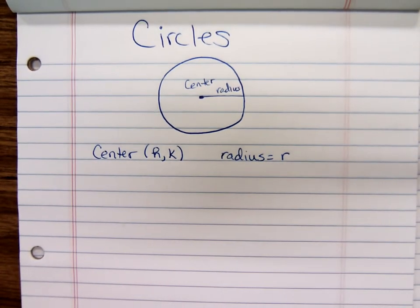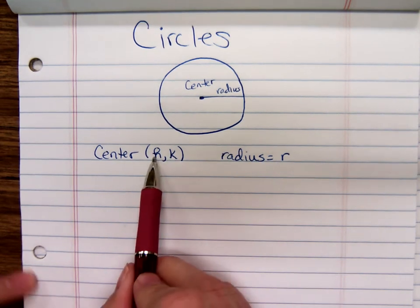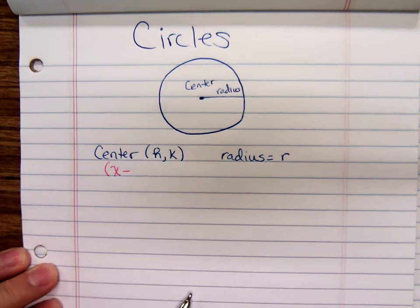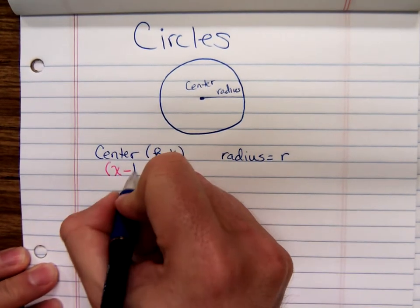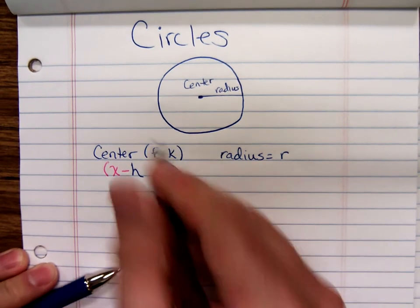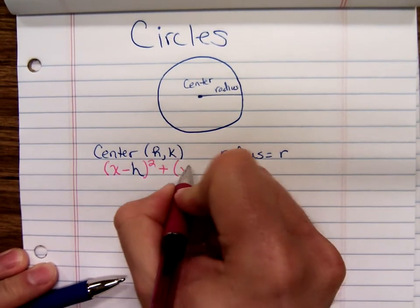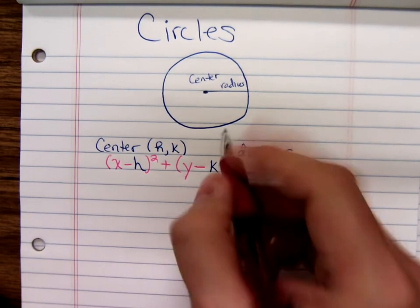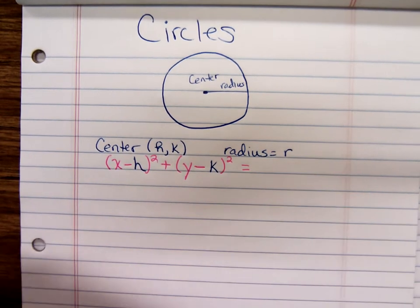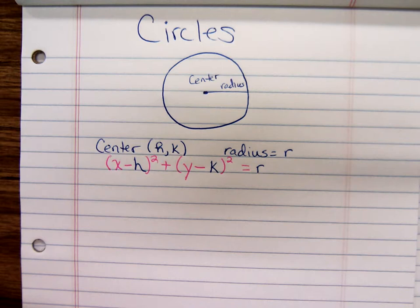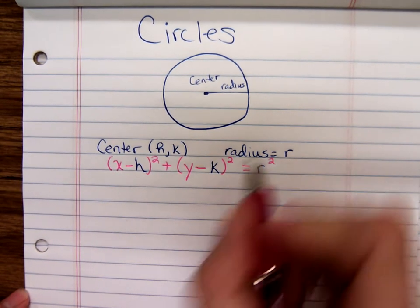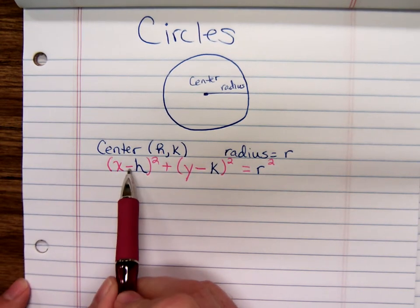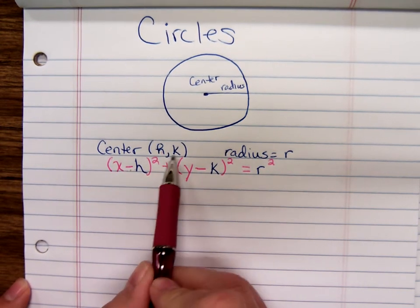To write the equation of a circle centered at h, k with the radius of r, you're going to do this. You go x minus the x coordinate of the center squared plus y minus the y coordinate of the center squared equals the radius squared. So x minus whatever that x coordinate is. If h were negative, you're going to wind up with a plus inside here. The same thing for k.